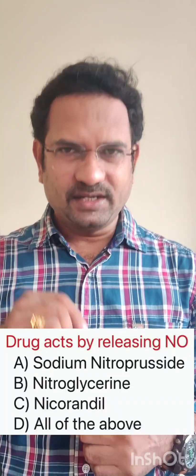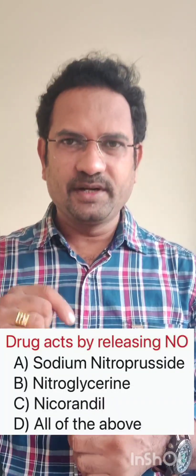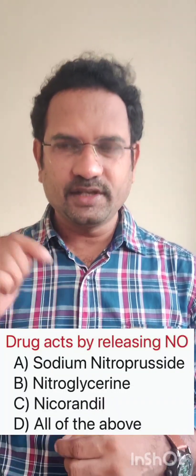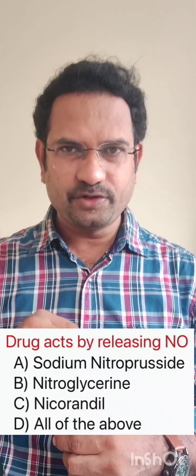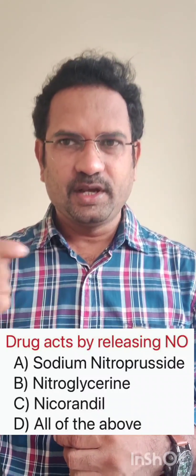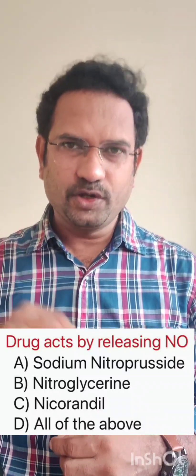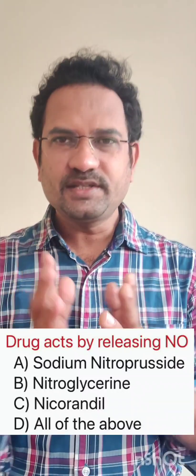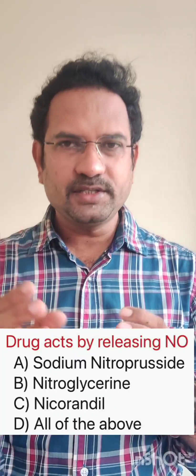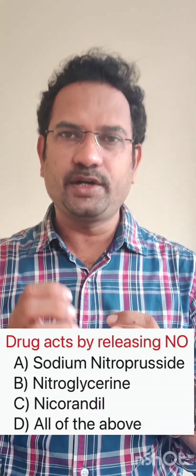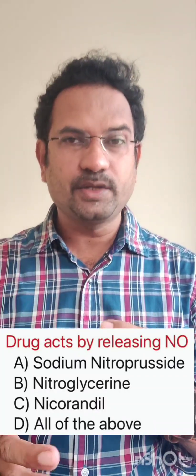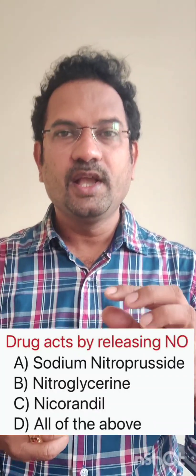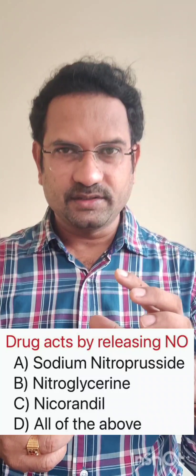The first question is: drugs that act by releasing nitric oxide. Examples given are sodium nitroprusside, nitroglycerin, nicorandil, or all of the above. Now understand the concept: drugs which release nitric oxide activate cyclic GMP and cause vasodilation.